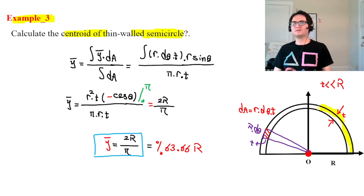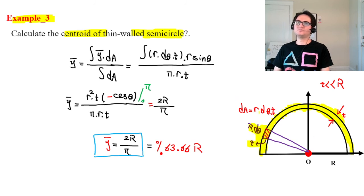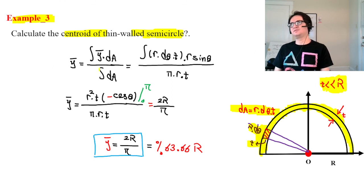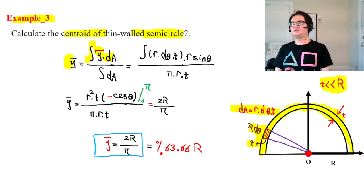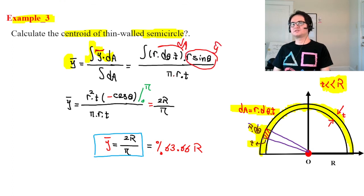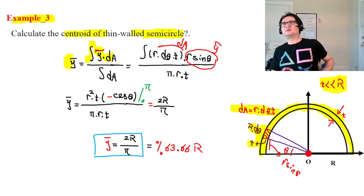Finally, let's consider a thin-wall semicircle. We assume a small element of thickness t and arc length r dθ, so dA equals r dθ times t. In the formula for y-bar, we divide by the total area pi r t. The y-component of each element is r sine θ, and integrating over 0 to π gives the centroid.